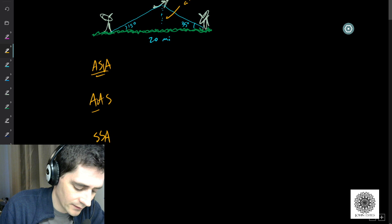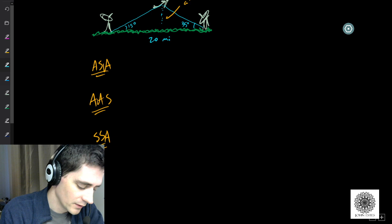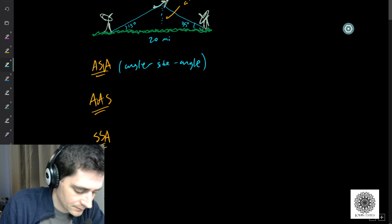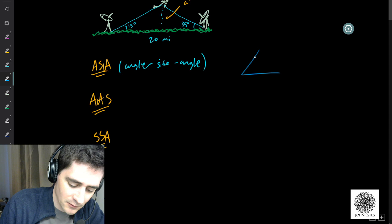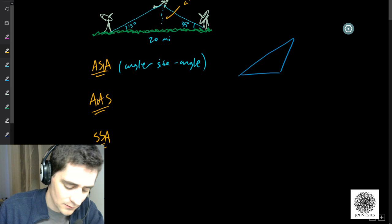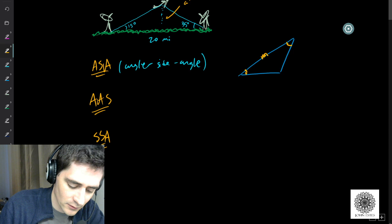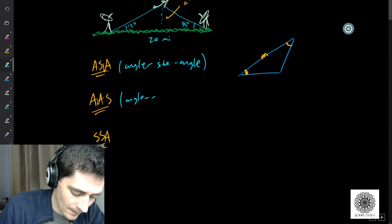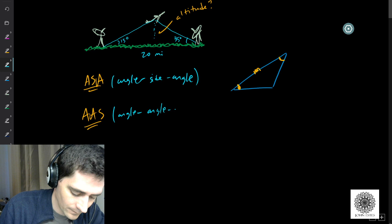What this refers to is the information given at the beginning of the question — what do you know about the triangle already? ASA means angle, side, angle: we know an angle, a side, and an angle in that order. From that, we can solve a triangle using the law of sines. The second case is AAS — angle, angle, side. And the third is SSA — side, side, angle.